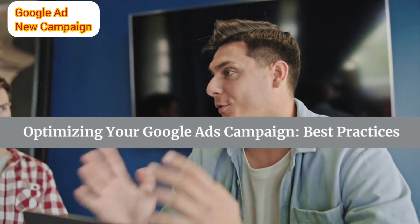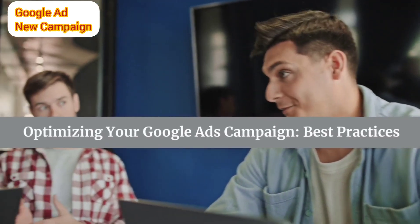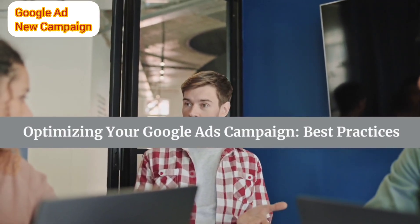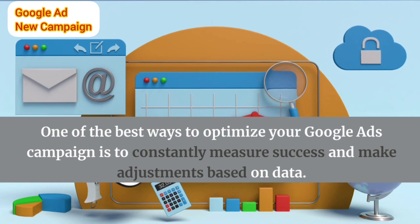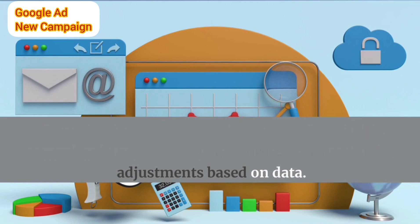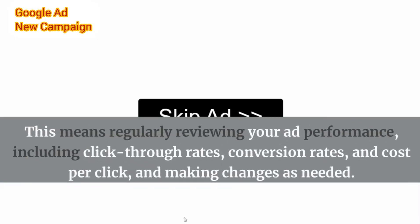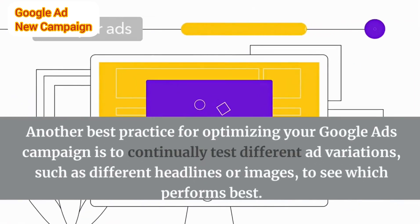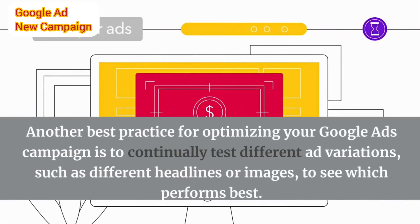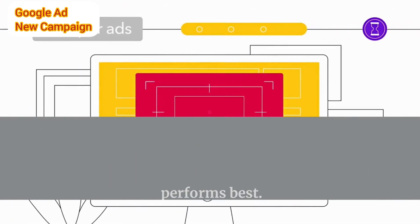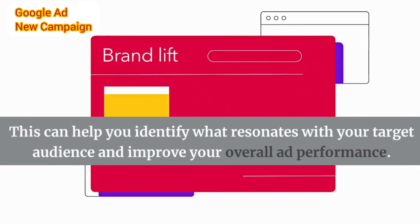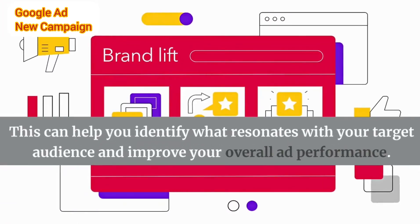Optimizing your Google Ads campaign — best practices: One of the best ways to optimize your campaign is to constantly measure success and make adjustments based on data. This means regularly reviewing ad performance, including click-through rates, conversion rates, and cost per click. Another best practice is to continually test different ad variations, such as different headlines or images, to see which performs best — helping you identify what resonates with your target audience.